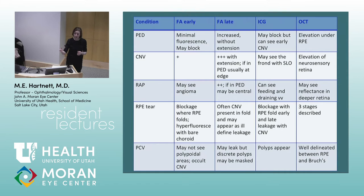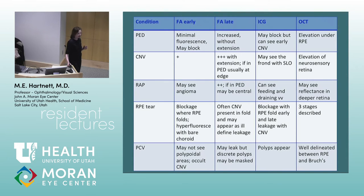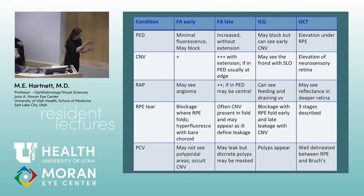RAP lesions, if associated with a pigment epithelial detachment, tend to be in the center of the PED. Choroidal neovascularization that breaks through the RPE into the neurosensory retina, when associated with a PED, appears as a notch at the edge. RPE tears can show extremely bright early fluorescence where the RPE is folded over, with reduced fluorescence in that area and a geographic line visible on the angiogram and OCT.